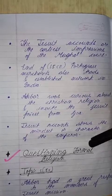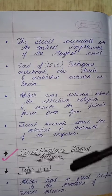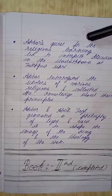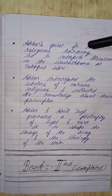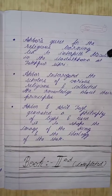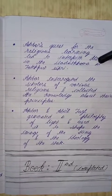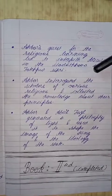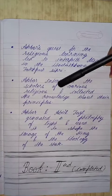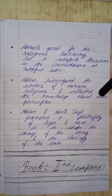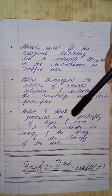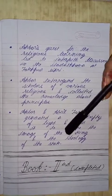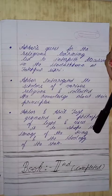Now we will see about topic 10: questioning formal religion. Akbar had great respect for members of different religious missions. Akbar's quest for religious learning led to interfaith discussions in the Ibadat Khana at Fatehpur Sikri. Akbar questioned the scholars of various religions and collected their knowledge about their principles. Akbar and Abul Fazl generated a philosophy of light and used it to shape the image of the king and the ideology of the state.